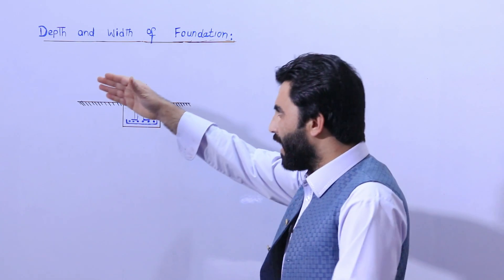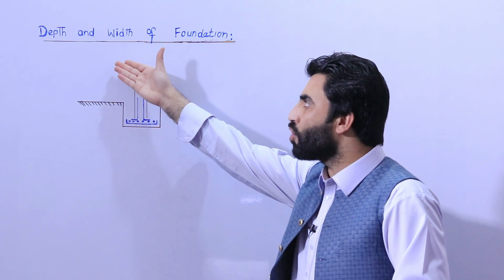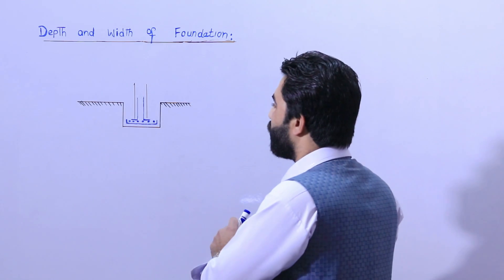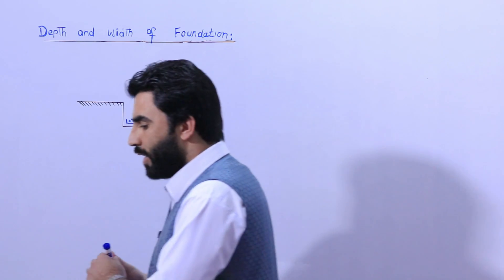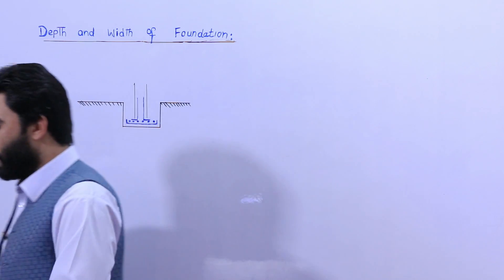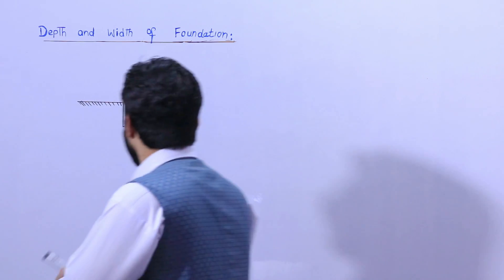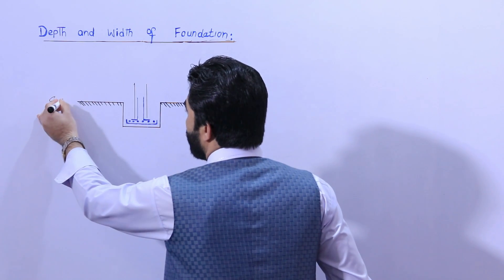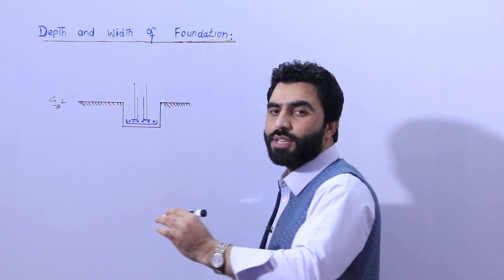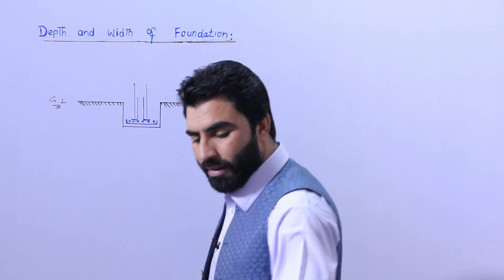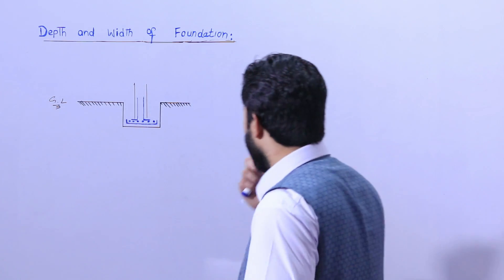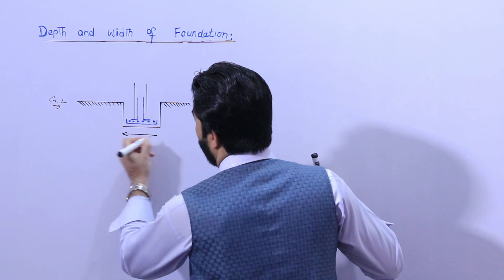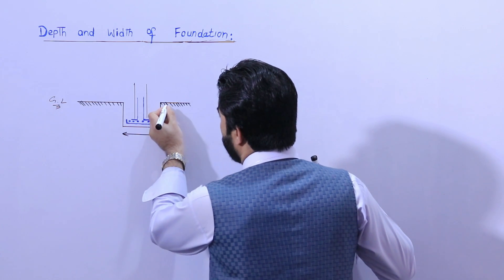As I discussed, the topic is depth and width of the footing. This is a square footing. I will guide you properly about this diagram. You can see this is ground level — GL. This is the width of the footing, and this is its depth.